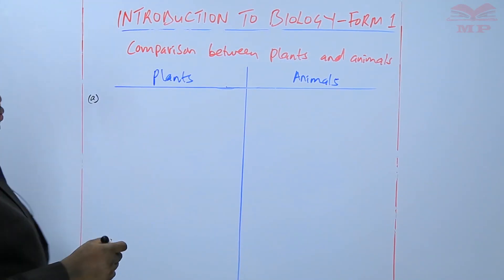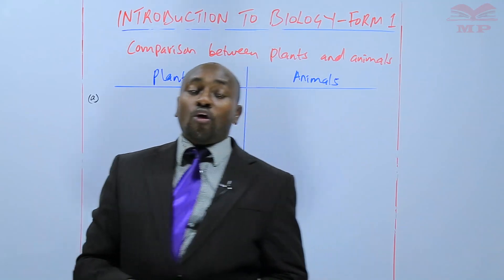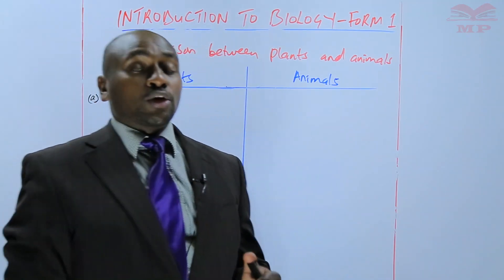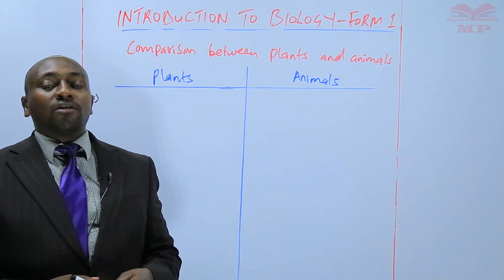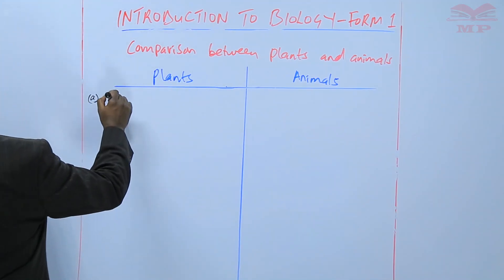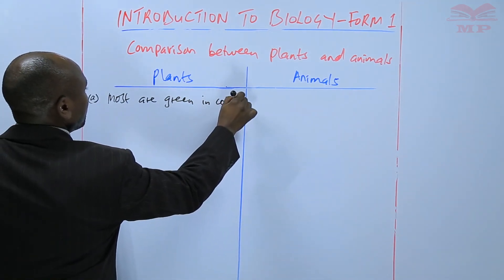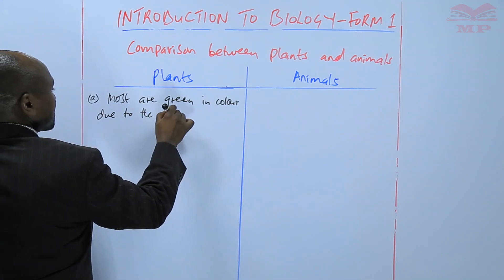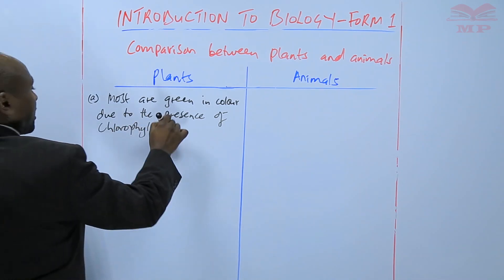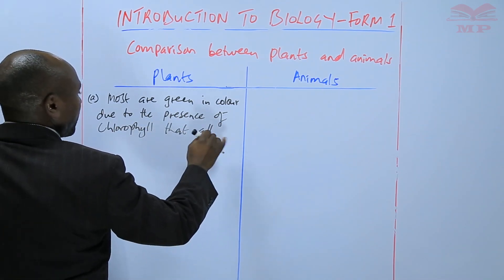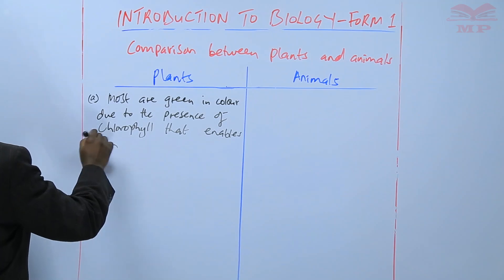For plants, most are green in color, and they are green because of the presence of chlorophyll. That chlorophyll is very important during the manufacture of food, what is called photosynthesis. So we are saying that most plants are green in color due to the presence of chlorophyll, which enables them to manufacture food.